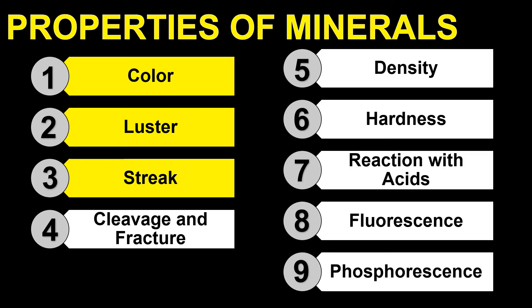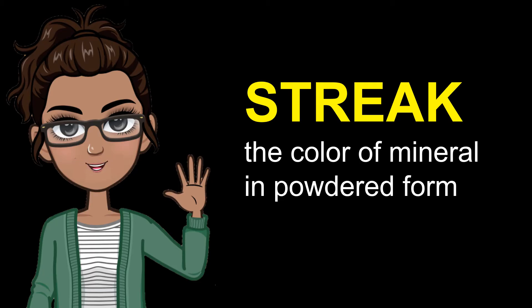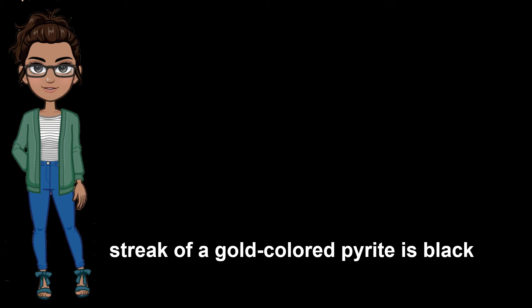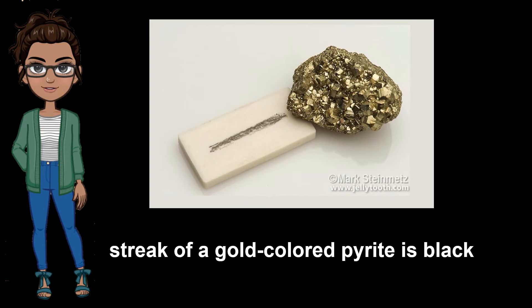The third property of mineral is streak. Streak refers to the color of a mineral in powdered form. The color of a mineral's powdered form may differ from its color in solid form. A mineral is rubbed against an unglazed ceramic tile to observe its streak. Metallic minerals have streaks that are dark in color. For example, the streak of a gold-colored pyrite is black in color. On the other hand, the streak of non-metallic minerals is generally light in color.